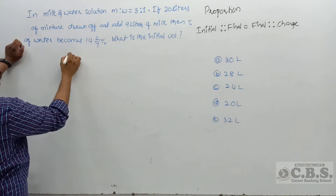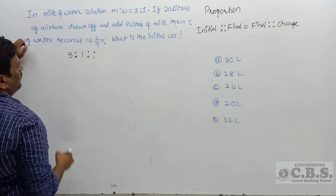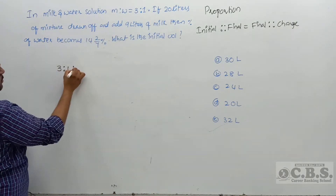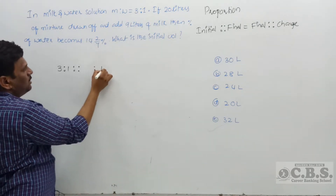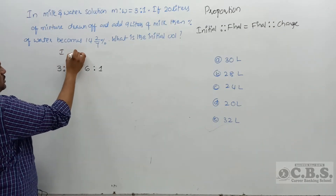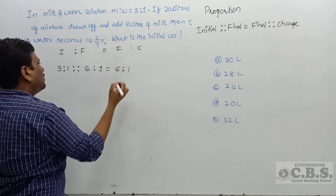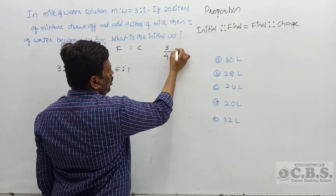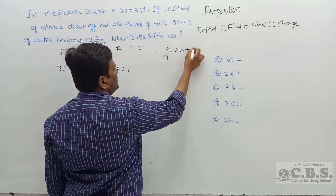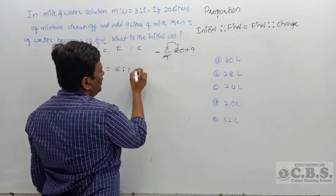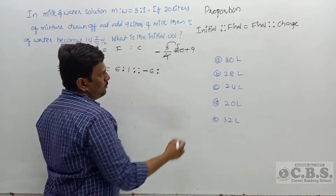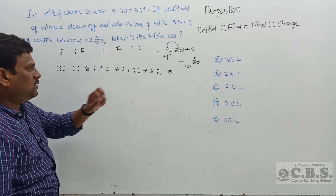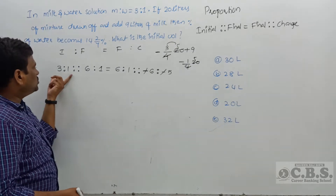Using the proportional concept: what is the initial ratio? 3 is to 1. What is the final ratio? Since 14 and 2/7 percent = 1/7, water is 1 part and milk is 6 parts, so final ratio is 6 is to 1. The concept is: initial to final equals final to change. For change: upon 4 parts, milk is 3 parts — 15 liters drawn off, 9 liters added, so net change for milk is minus 6. Water: 5 liters drawn off, 0 added, so minus 5. Change ratio is minus 6 to minus 5.